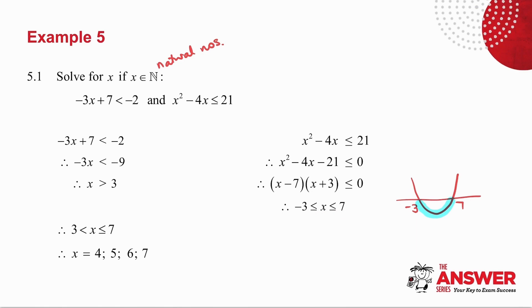Now both of these must happen at the same time because this says and. So I know that X must be greater than 3 and at the same time X must be greater than or equal to minus 3 less than or equal to 7. Which means that X has got to be greater than 3 less than or equal to 7. So the greater than 3 comes from here and the less than or equal to 7 from there.